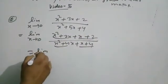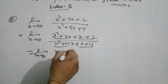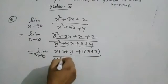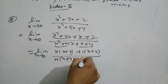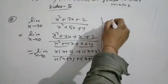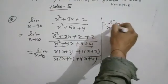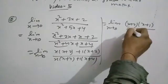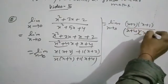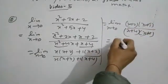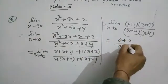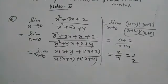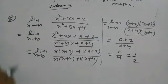Taking the limit x tends to 0, the (x+1) factors cancel. We are left with (x+2)/(x+4). Substituting x = 0 gives 2/4, which equals 1/2. Next question.